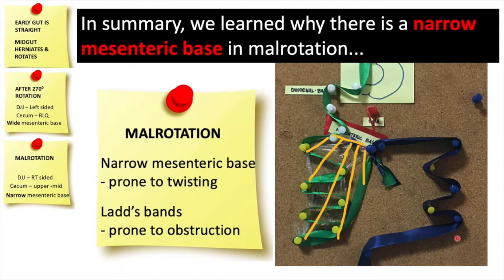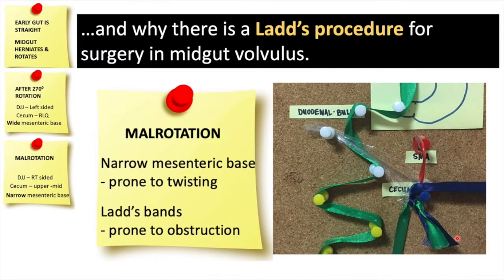So in summary, we learned that if there is a narrow mesenteric base in malrotation, it's going to be prone to twisting. We also learned why there is a Ladd's procedure for surgery in mid-gut volvulus.